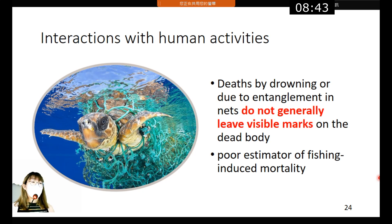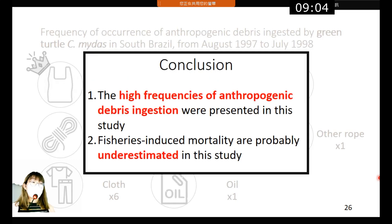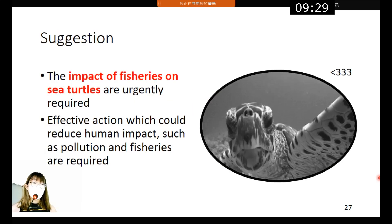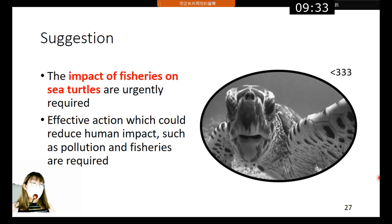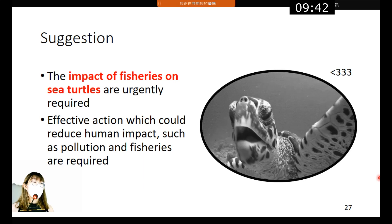Sea turtles could be considered a poor estimator of fishing-induced mortality. In conclusion, a considerable amount of anthropogenic debris ingestion was found, proving the high frequency of such ingestion in this study. The cause of sea turtle deaths is difficult to determine, so fisheries-induced mortality is probably underestimated. Furthermore, the impact of fisheries on sea turtles requires urgent attention, and effective actions to reduce human impacts such as pollution and fishing bycatch are required.